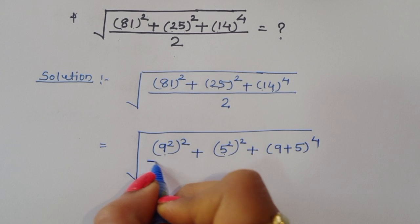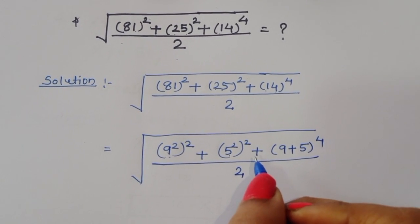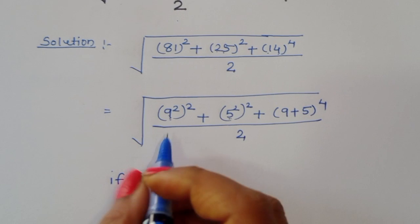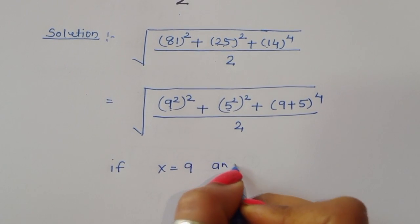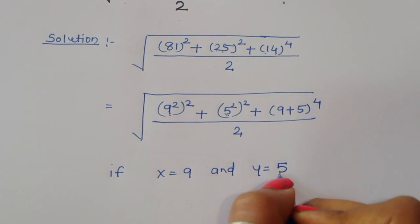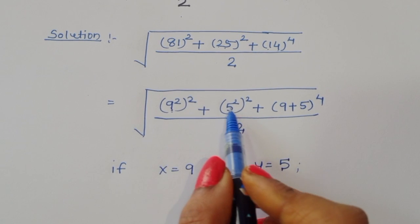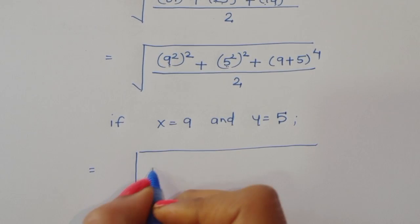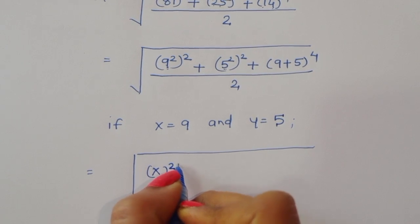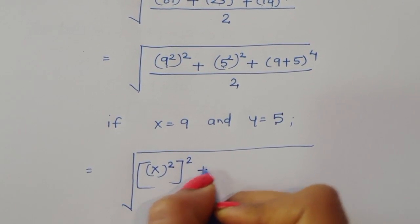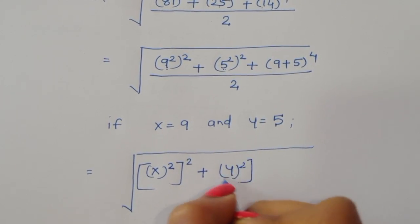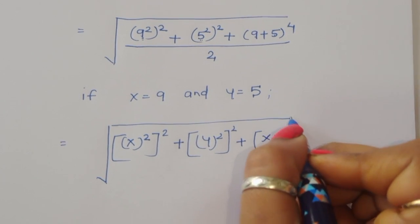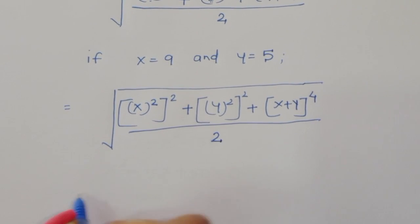We can also write this as (5+9)/2. Now, let x = 9 and y = 5. With this substitution, we can rewrite the expression as √(x⁴ + y⁴ + (x+y)⁴ / 2).